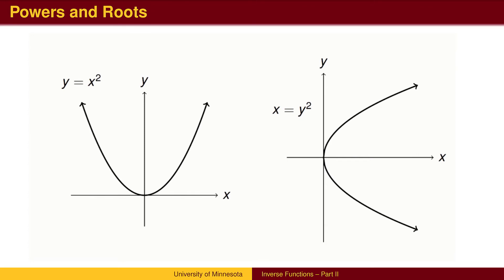Certain functions are not one-to-one, so we must restrict the domain to a portion of the graph that is one-to-one to find an inverse. For example, the function y equals x squared is not one-to-one. Each y value corresponds to two x values, one positive, one negative.